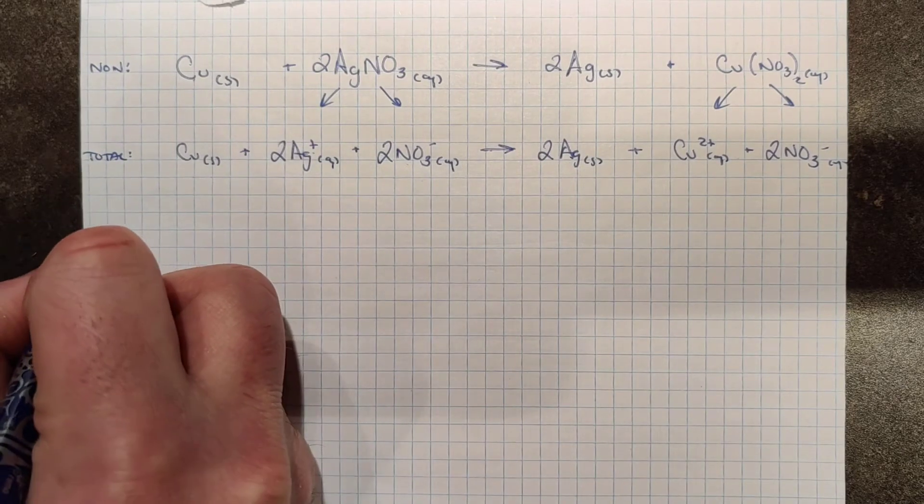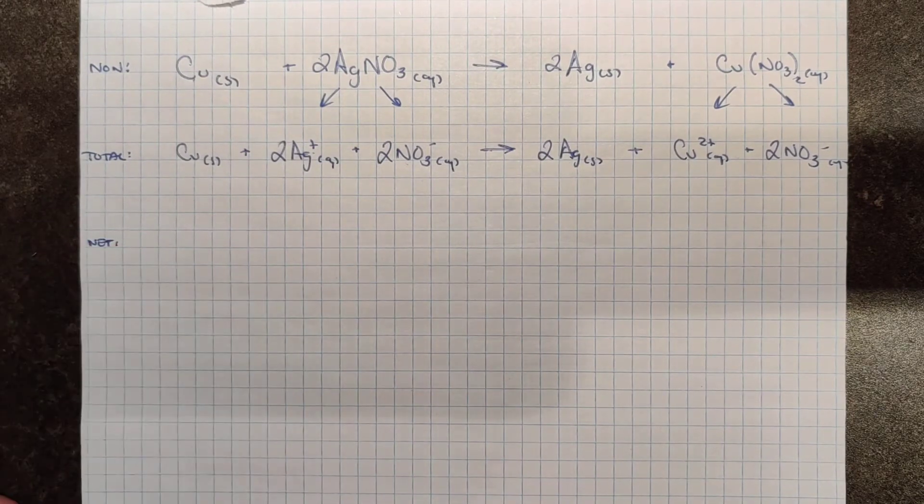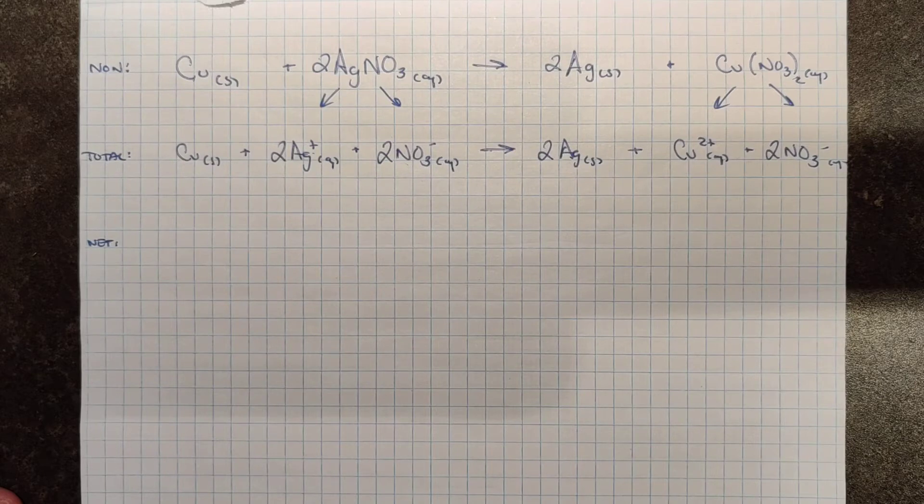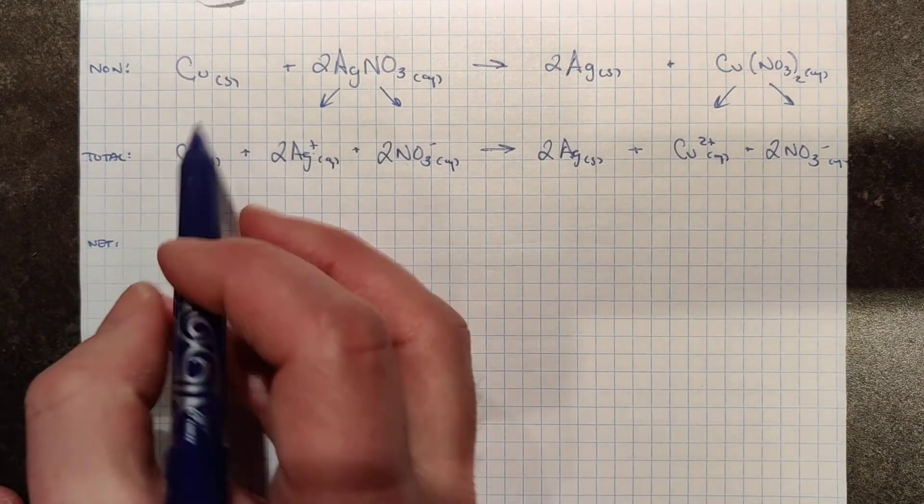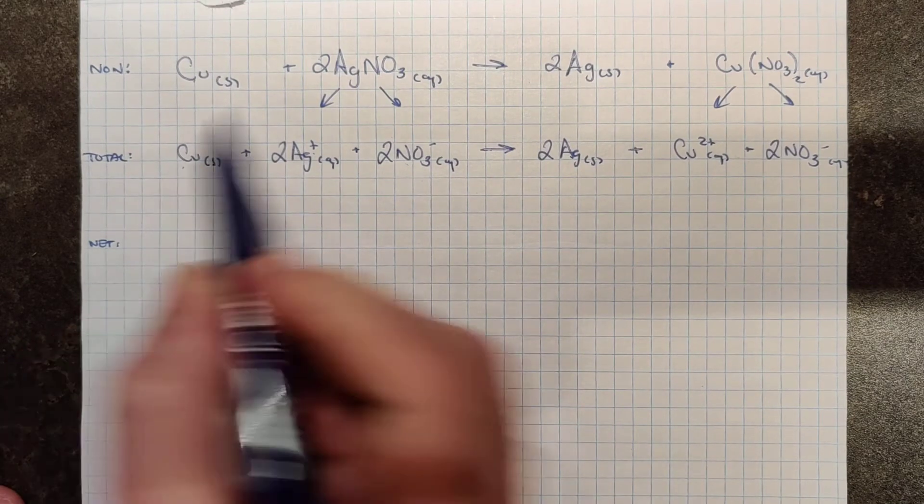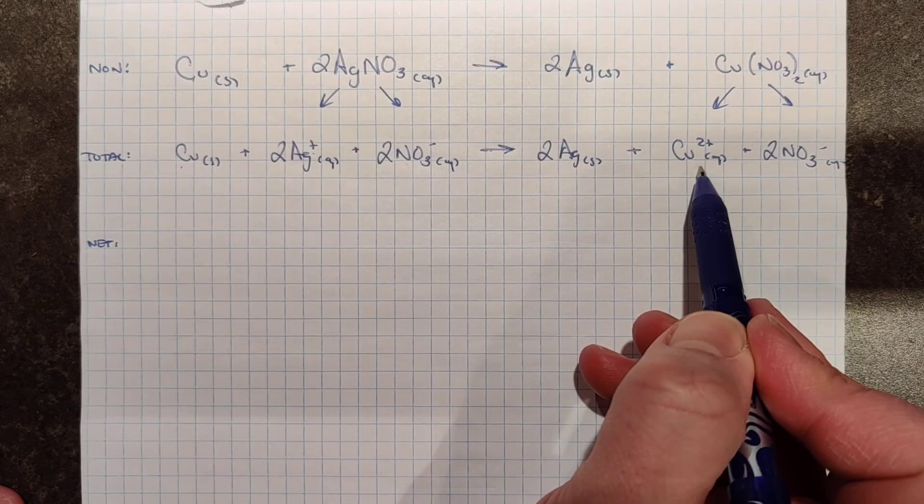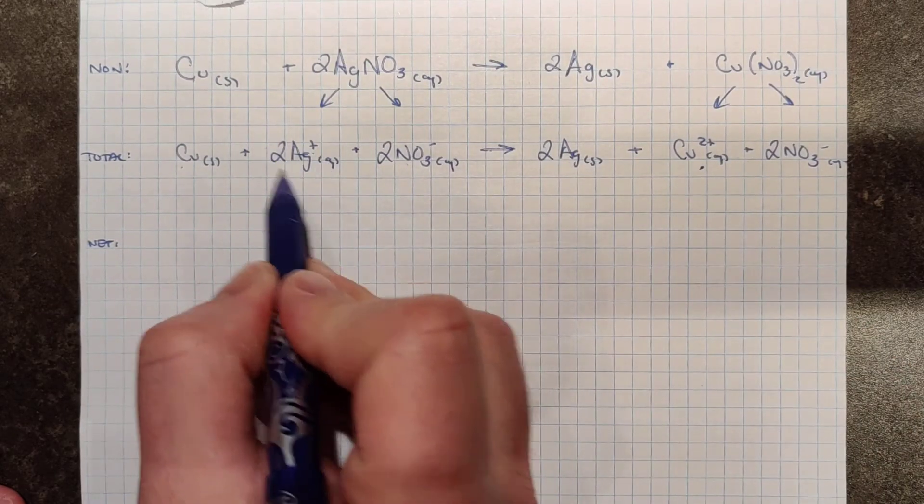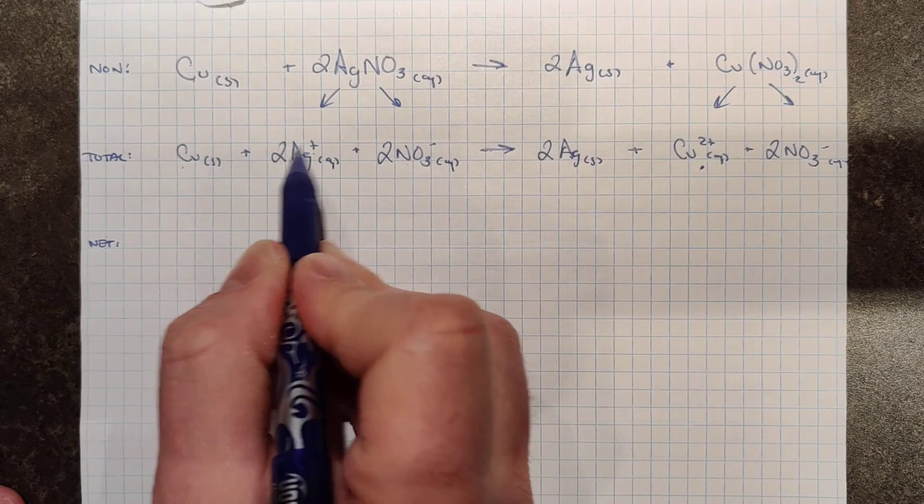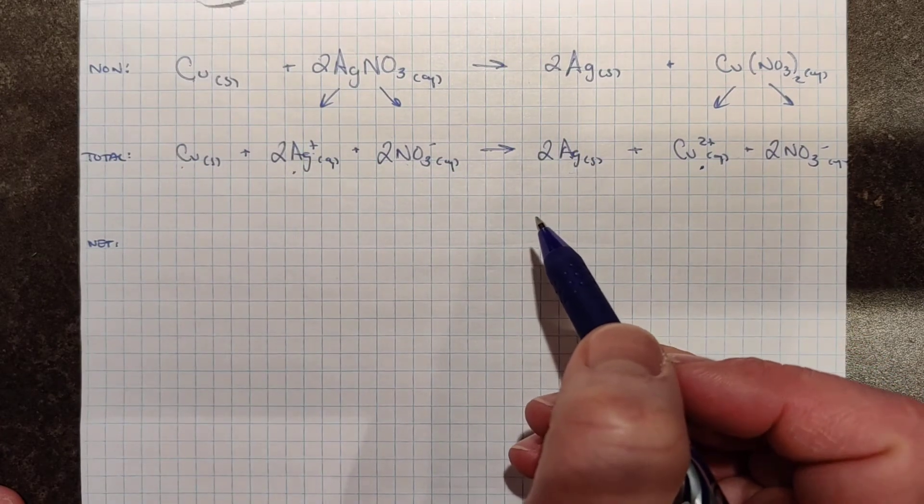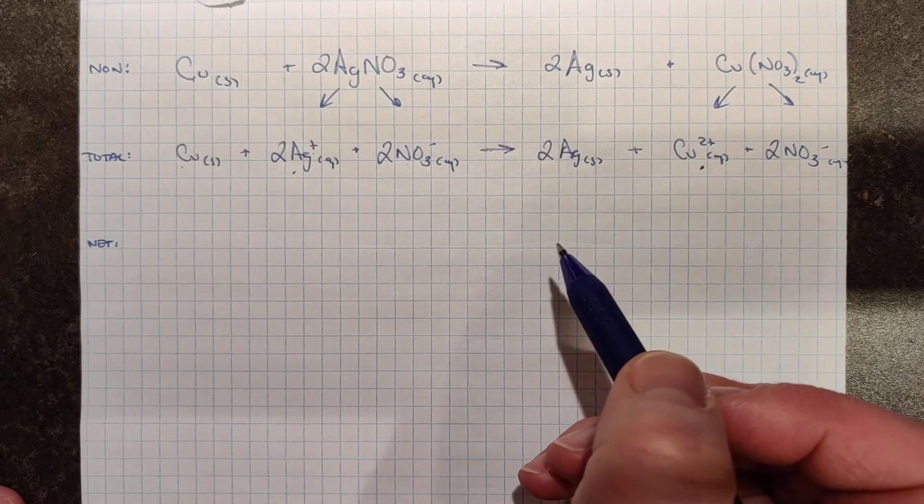To get to the net ionic equation, what we did is we looked for things that were called spectator ions. In other words, we're looking for things that went through no change in state nor a change in charge. If we follow copper, it was elemental, but now it's ionic. It went through a change, so it obviously participated in some sort of reaction. I have silver ions here. That has a charge. But after the reaction, I had elemental silver. So it's gone through a change and been involved in some sort of chemical reaction.